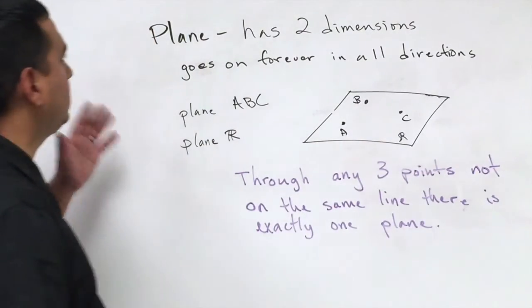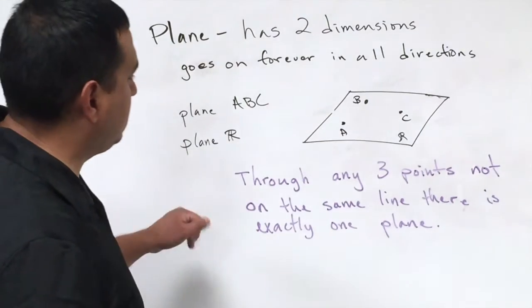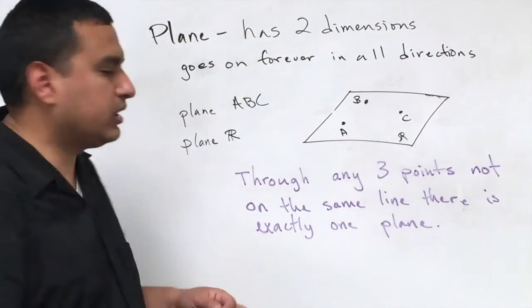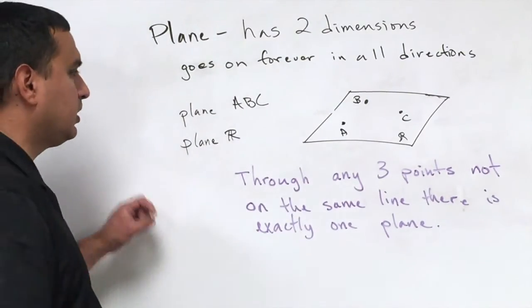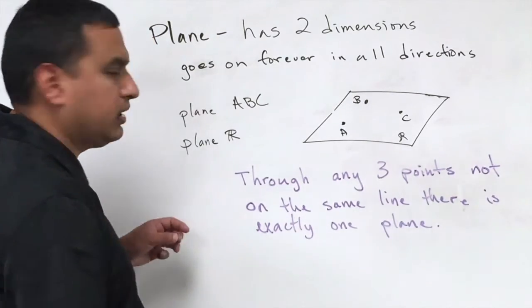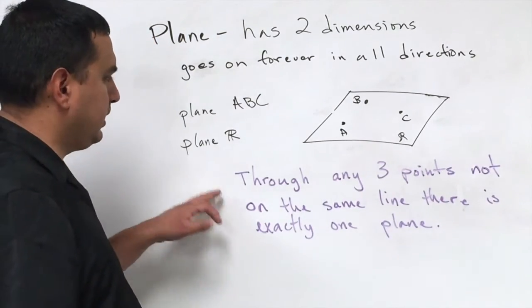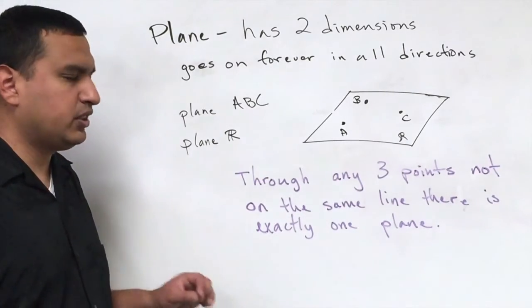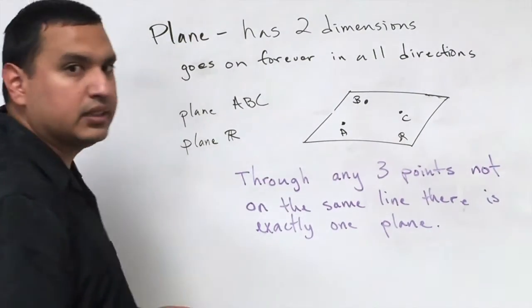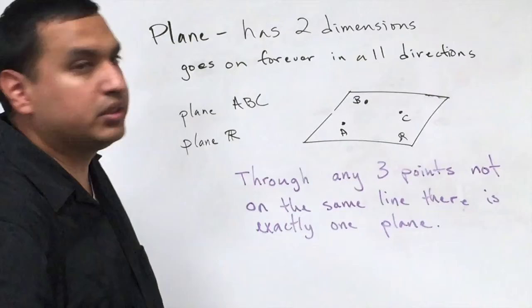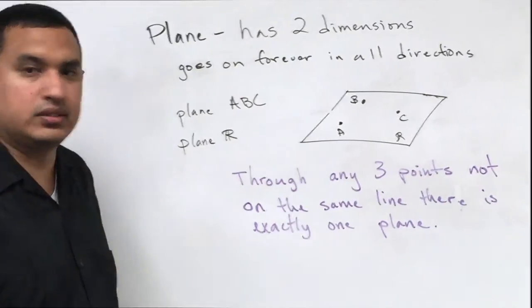Now similar to a line, a plane has something else you need to know about it as well, something important that we will talk again about in another lesson. And it just says that through any three points, not on the same line, there is exactly one plane. That is important. You do need to remember that and write that down.